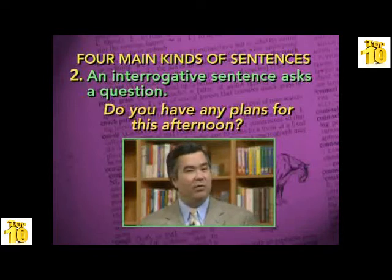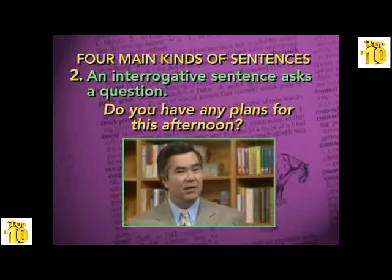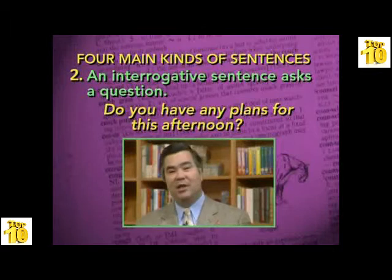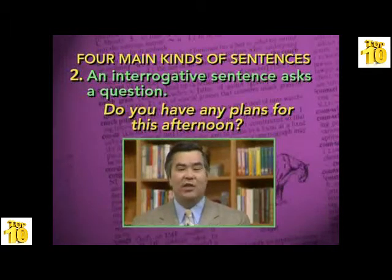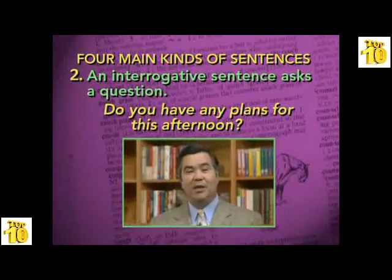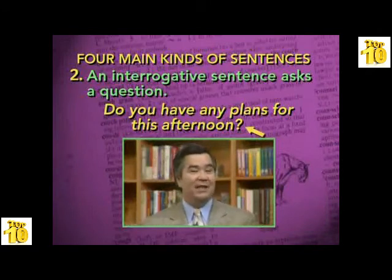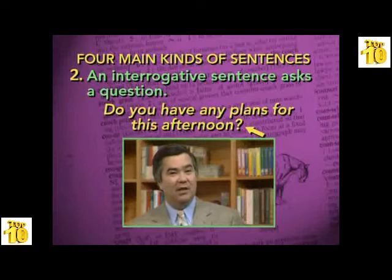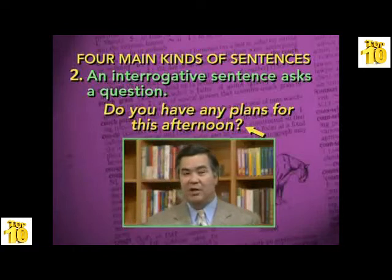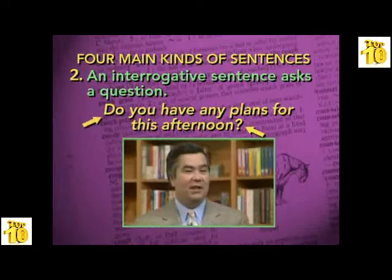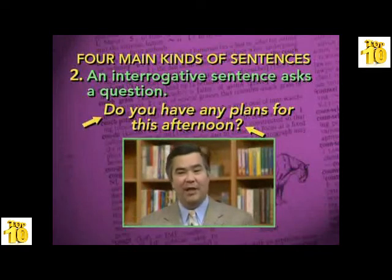An interrogative sentence asks a question. For example: 'Do you have any plans for this afternoon?' When I say this interrogative sentence, I'm asking a question of whoever is listening. An interrogative sentence ends with a question mark, which makes it clear to the reader that a question is being asked. Like all sentences, it begins with a capital letter.